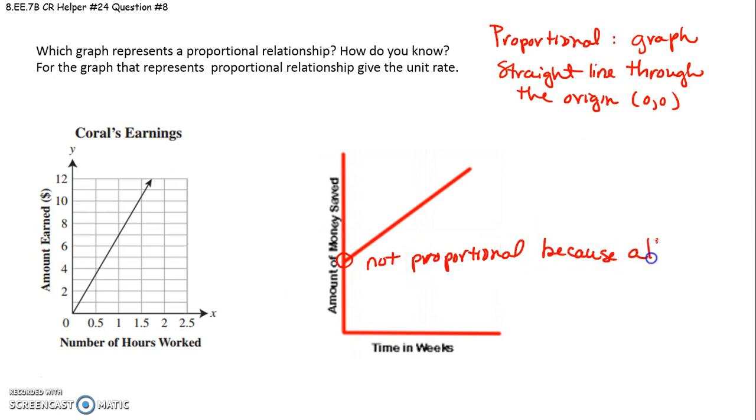Because although it is a straight line, starts here and goes up at a constant rate, it does not pass through the origin.